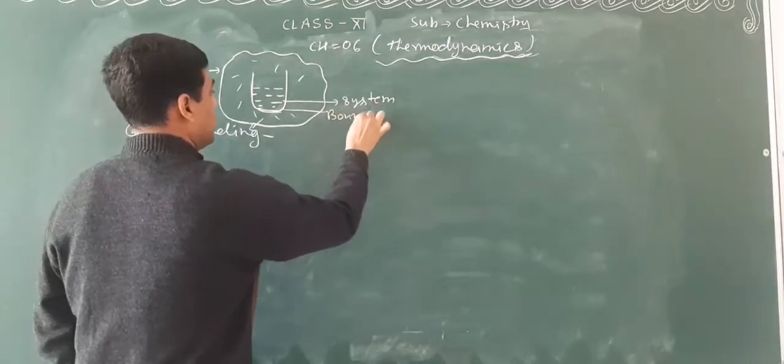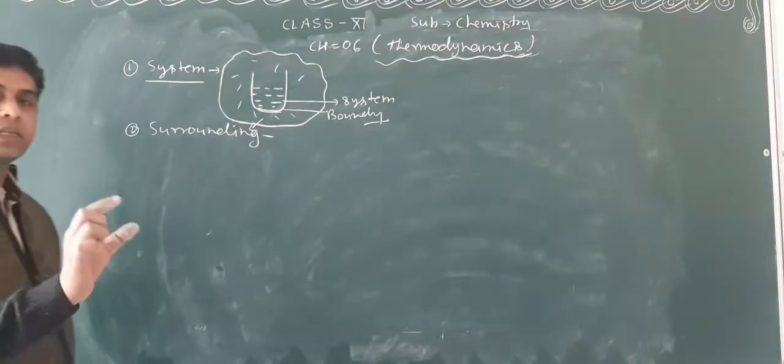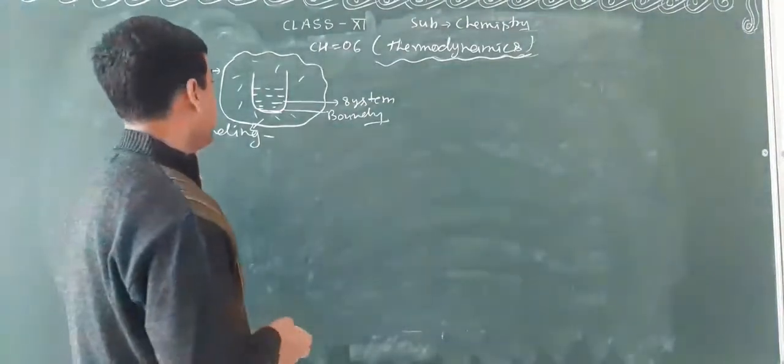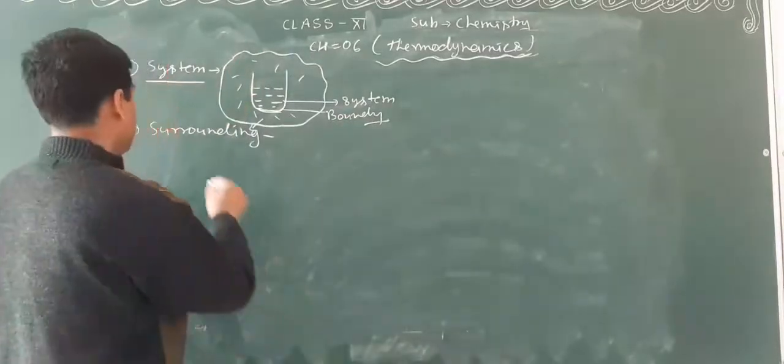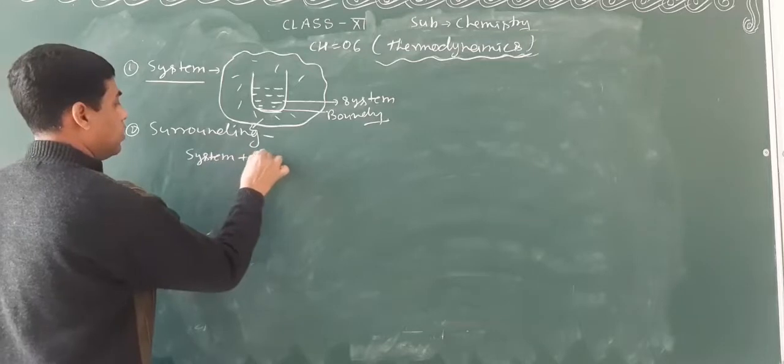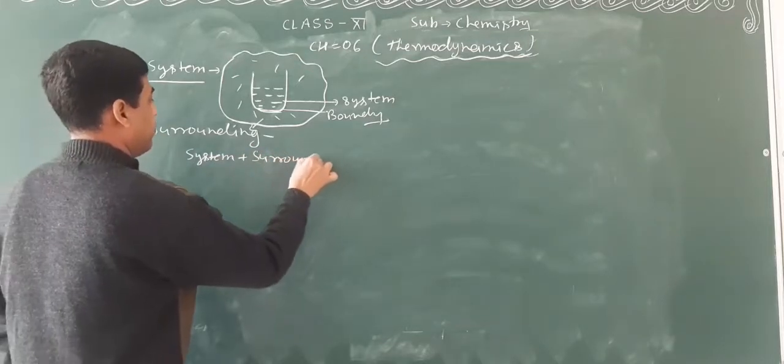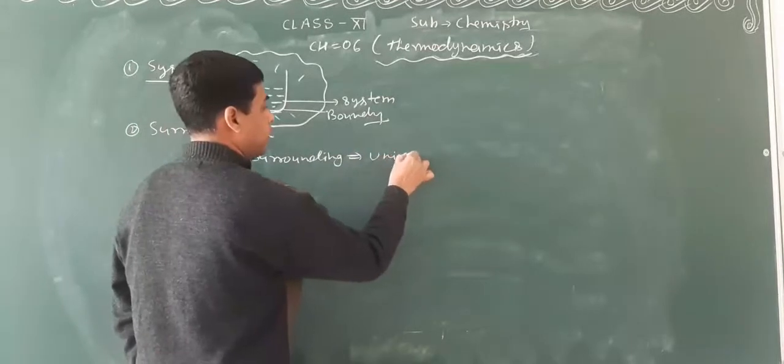To separate system and surrounding, we have the boundary. System and surrounding separated by the boundary. System plus surrounding with boundary equals universe.